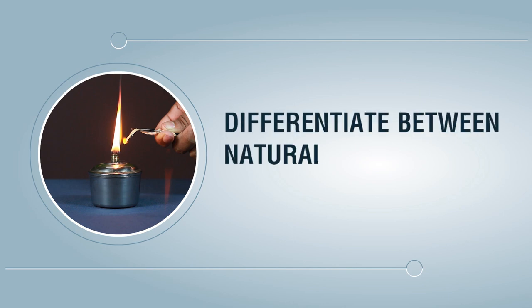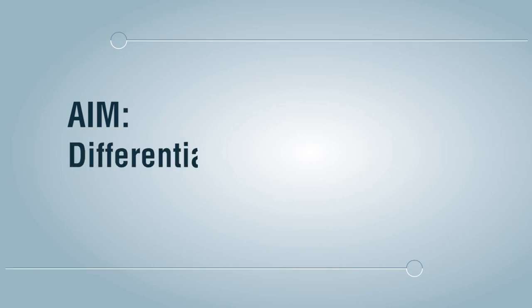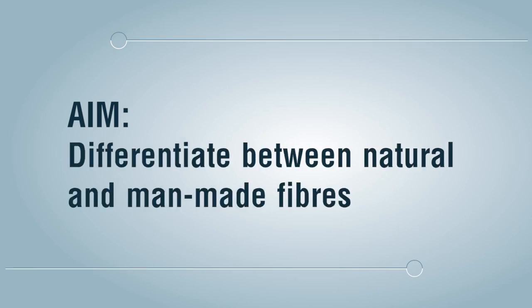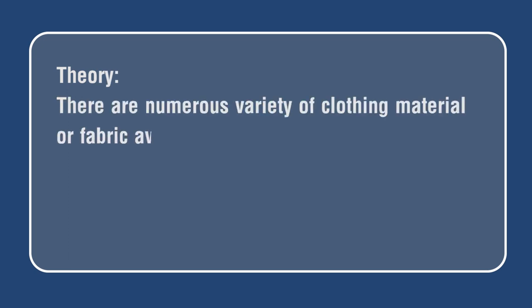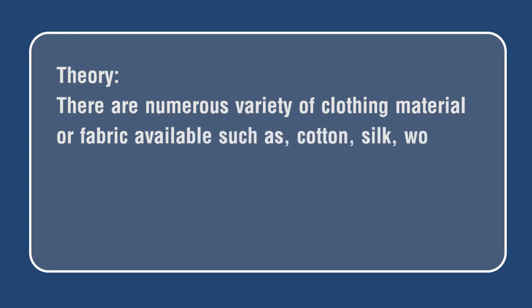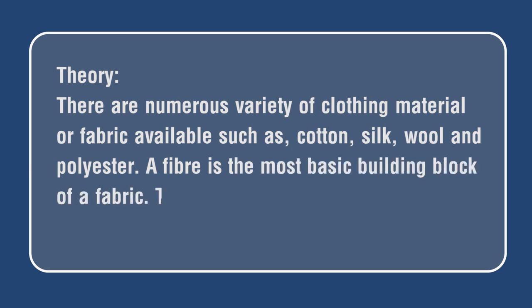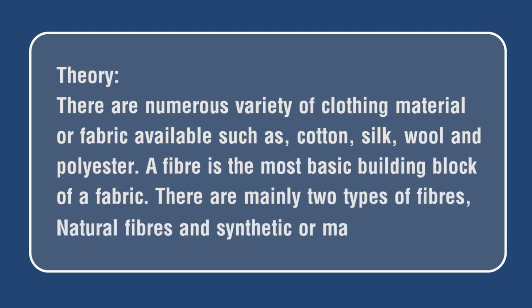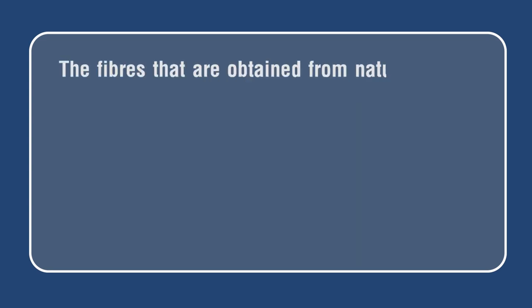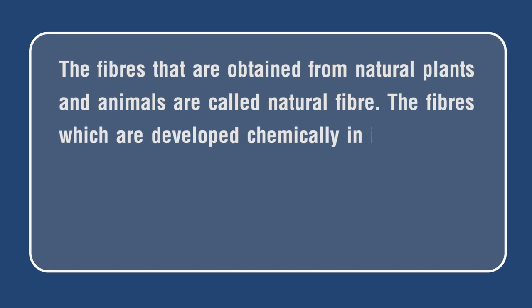Aim: differentiate between natural and man-made fibers. There are numerous varieties of clothing material or fabric available, such as cotton, silk, wool, and polyester. A fiber is the most basic building block of a fabric. There are mainly two types of fibers: natural fibers and synthetic or man-made fibers. The fibers obtained from natural plants and animals are called natural fibers.